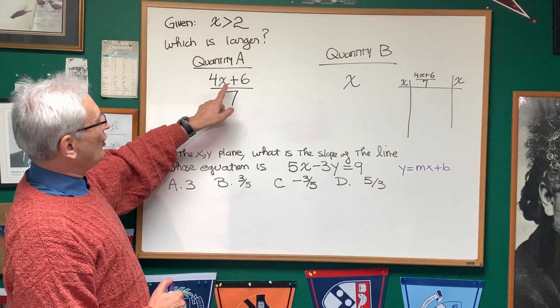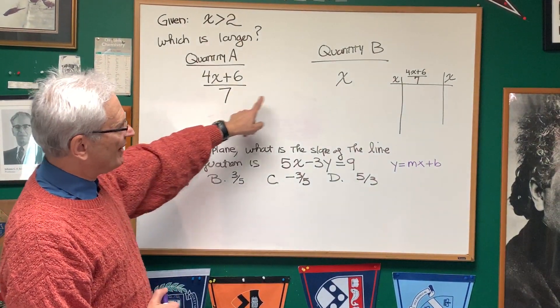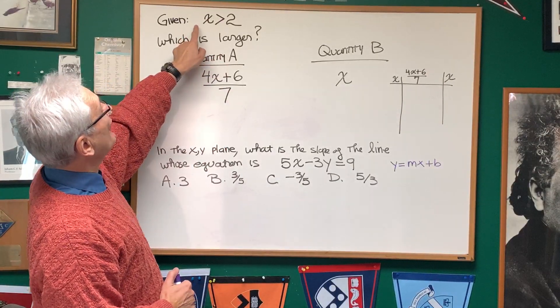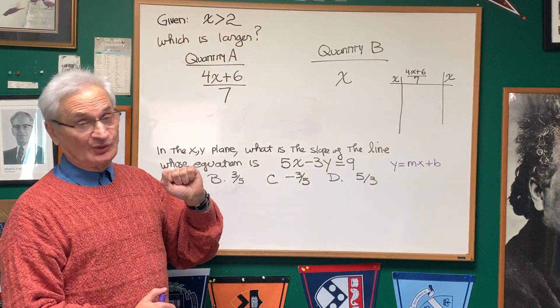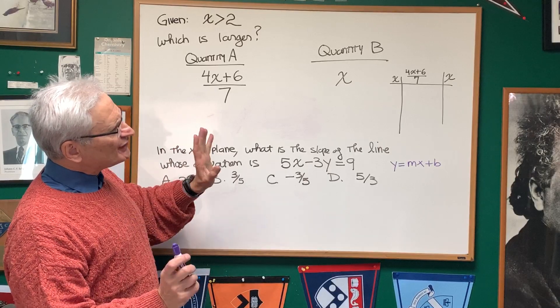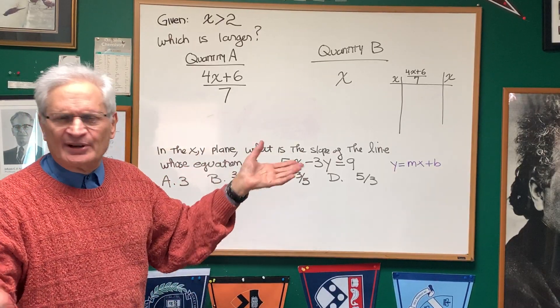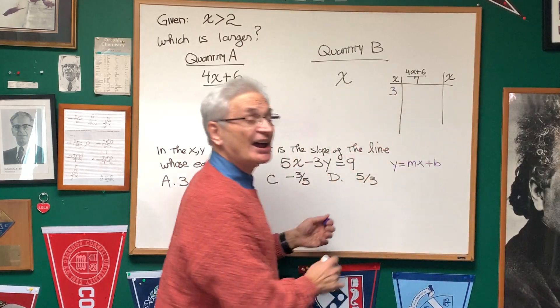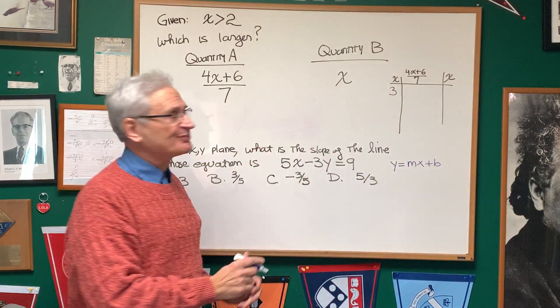The quantity A, 4x plus 6 divided by 7, and quantity B is x, with the preamble that x is greater than 2. Okay, now, the first thing that we, one immediate approach to this is to pick a number that's greater than 2, like 3, and we'll put it into each of those expressions.